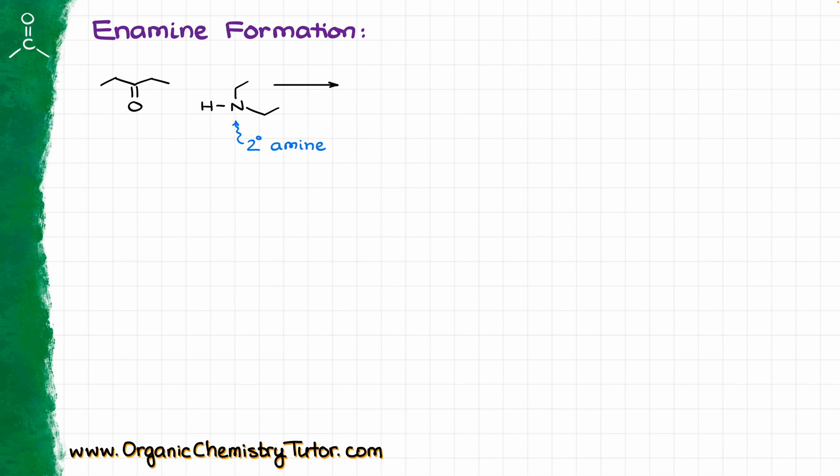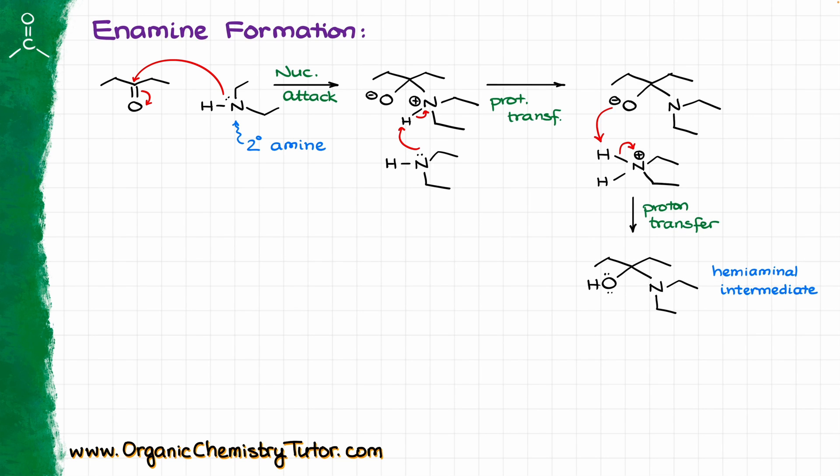Now, when it comes to the enamine formation, well mechanistically speaking the enamine formation is exactly the same as the imine formation, with the exception of the very last step. Here I want to point out that in order to make an enamine, we are going to use a secondary amine, unlike in the case of the imine formation, for that guy we use the primary amine. So the first step here, just like in the previous case, is going to be the nucleophilic attack on our oxygen, giving us a double charged zwitterionic intermediate, and then over a couple of proton transfer steps we are going to reach the same midpoint, which is our hemi-aminol intermediate.